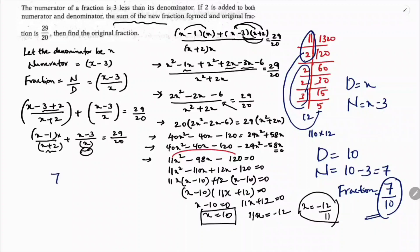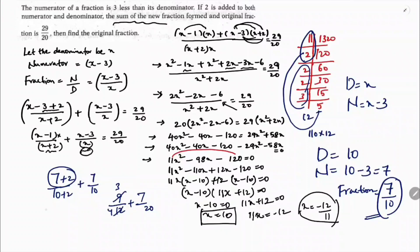If you want, you can check: the fraction is 7 by 10. If you add 2 to both numerator and denominator, you get 9 by 12, and the original fraction is 7 by 10. Now 9 by 12 simplifies to 3 by 4. So 3 by 4 plus 7 by 10: LCM is 20, giving 15 by 20 plus 14 by 20, which is 29 by 20. This is the verification. The answer is the fraction is 7 by 10.